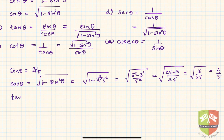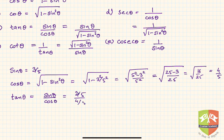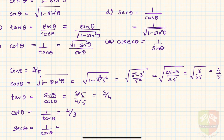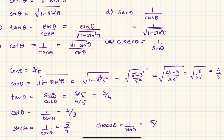Now what will be tan theta? Tan theta equals sin theta by cos theta, which is 3 by 5 divided by 4 by 5, equal to 3 by 4. Then cot theta is 1 upon tan theta, so it is 4 upon 3. Secant theta is 1 upon cos theta, which is 5 upon 4. And cosecant theta is 1 upon sin theta, which is 5 upon 3. Hence we could find out all the values of the other trigonometric ratios if we know one of them.